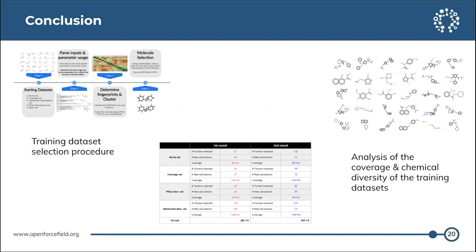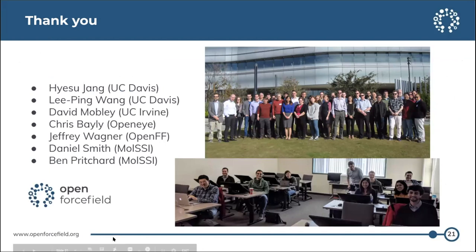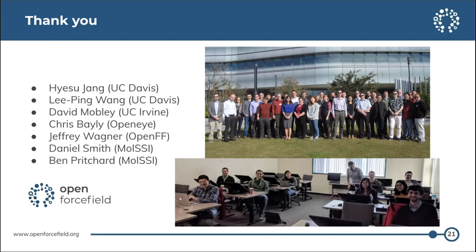In conclusion, I have gone over our training data set selection procedure for gen 2 and the analysis of coverage and chemical diversity of the new training data set. I want to thank Hesu for working with me on this project and doing a lot of really great research, and I also want to thank Lee-Ping, my PI David Mobley, and Chris Bailey for all of their help and scientific input, and Jeff Wagner, Daniel Smith, and Ben Pritchard for helping get these data sets completed in QC archive.